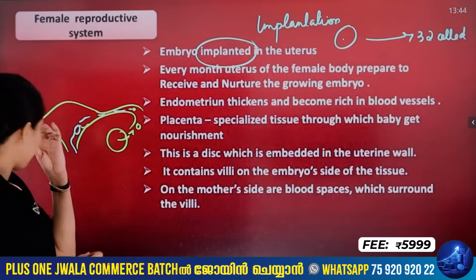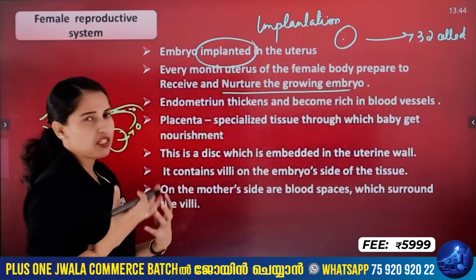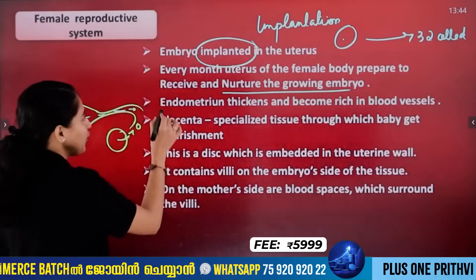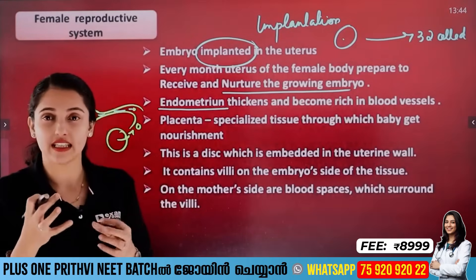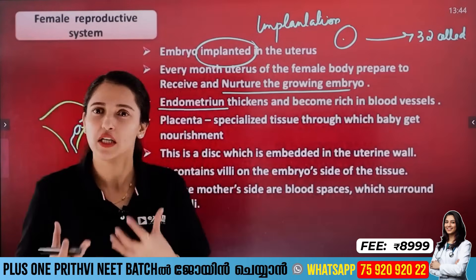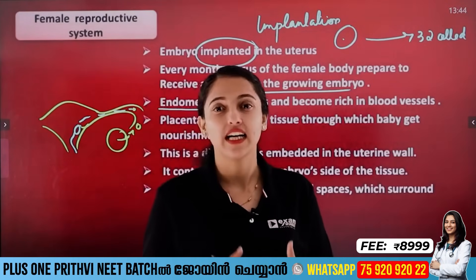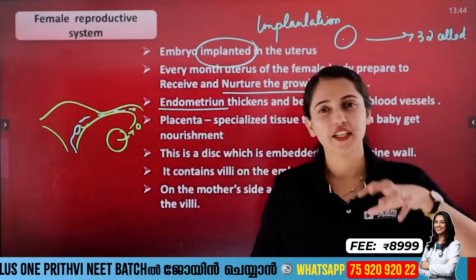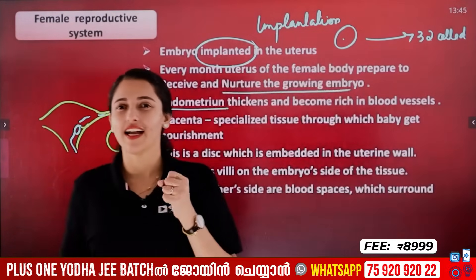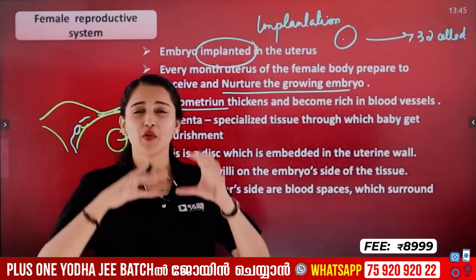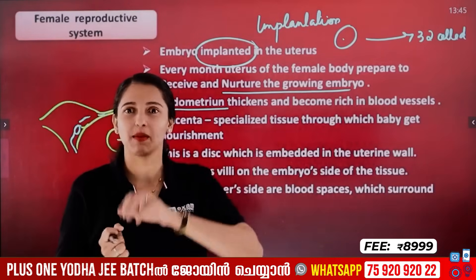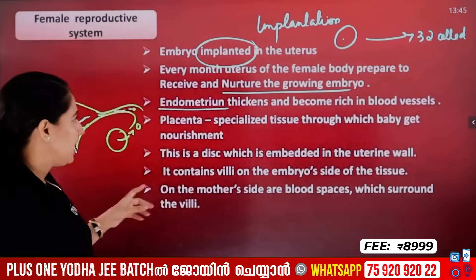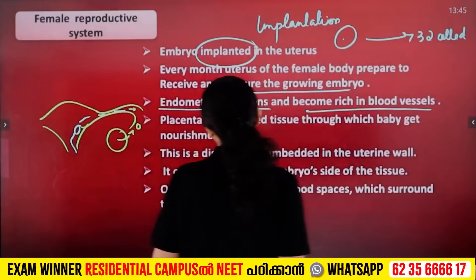Every month, the uterus of the female body is prepared to receive and nurture the growing embryo. The endometrium is thick and spongy. Because the baby needs to exchange nutrients and oxygen, a lot of vascular connections and blood vessels form, making the uterine wall thicker and rich in blood vessels — and this is how the placenta forms.